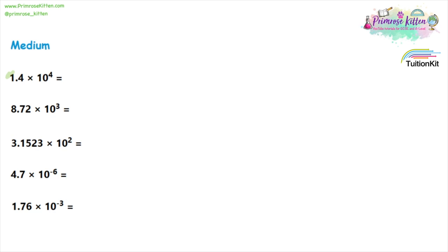Some slightly harder questions now, because these involve decimal points. We have 1.4 times 10 to the 4. Now this 1 is the only number before the decimal point, so that stays as it is. The .4, which comes after the decimal point, is included into the 10 to the 4. So this time, instead of writing zeros, we're going to write four numbers after the 1, and the first one is a 4 — so 4, 0, 0, 0.